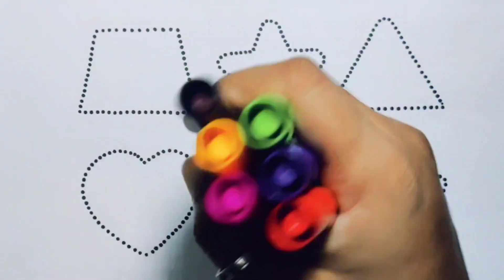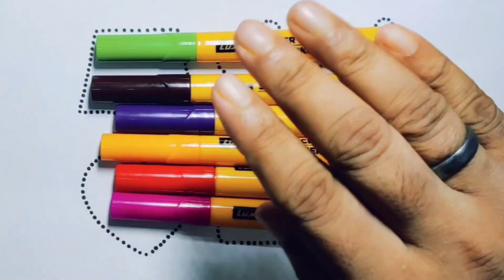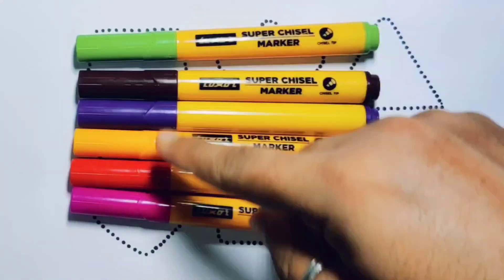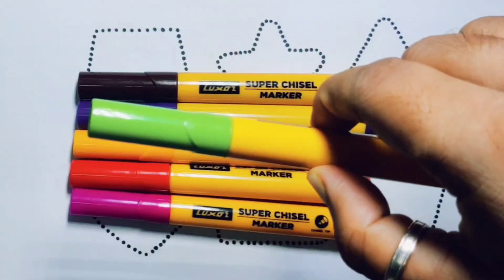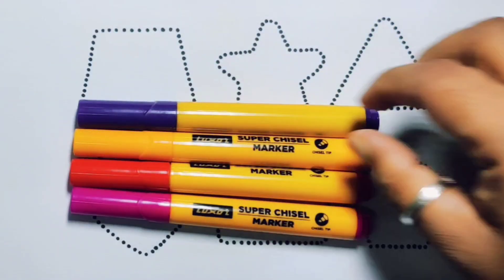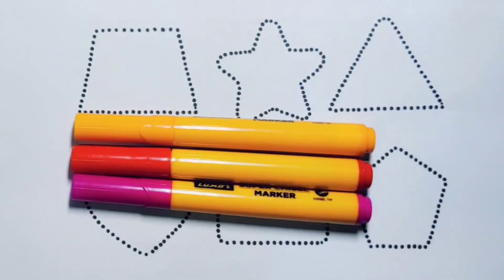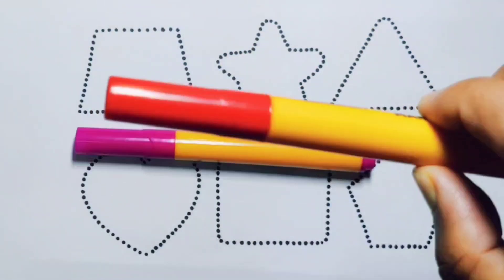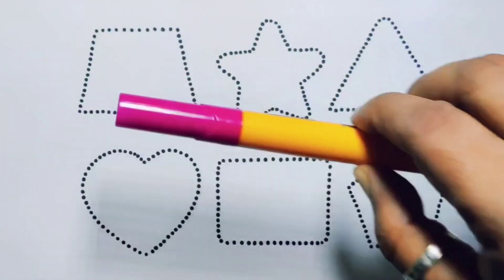Hello kids, welcome to my new video. First we're going to know the color's name: green color, chocolate color, purple color, orange color, red color, pink color.